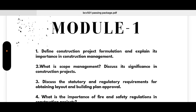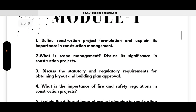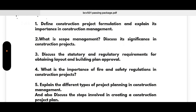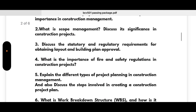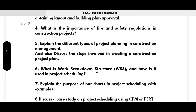From Module 1, we have some super important questions and numericals. First: define construction project formulation and explain its importance in construction management. Second: what is scope management — discuss its significance in construction projects. Third: discuss the statutory and regulatory requirements for obtaining layout and building plan approval. Fourth: what is the importance of fire and safety regulations in construction projects?